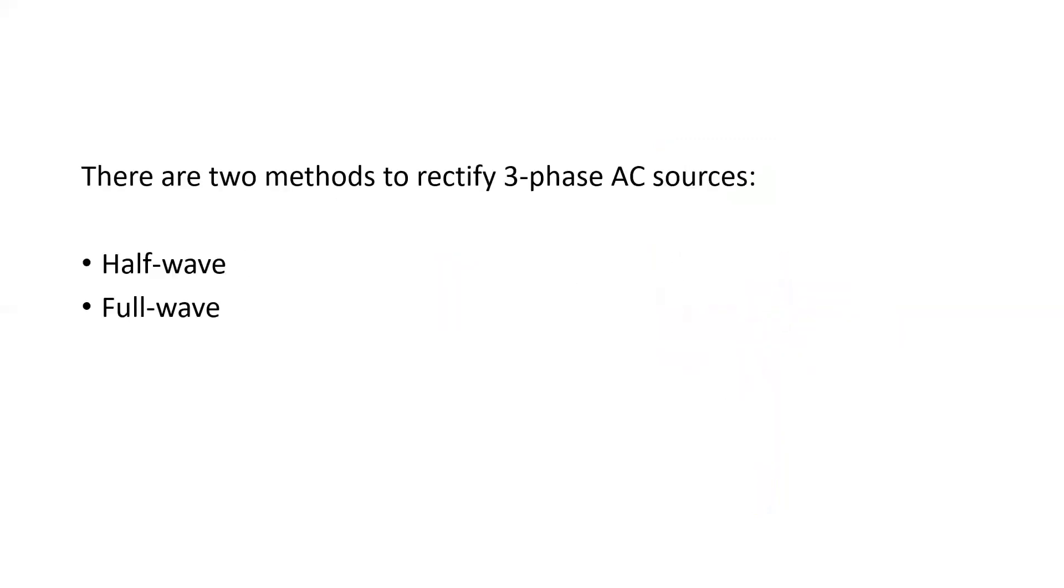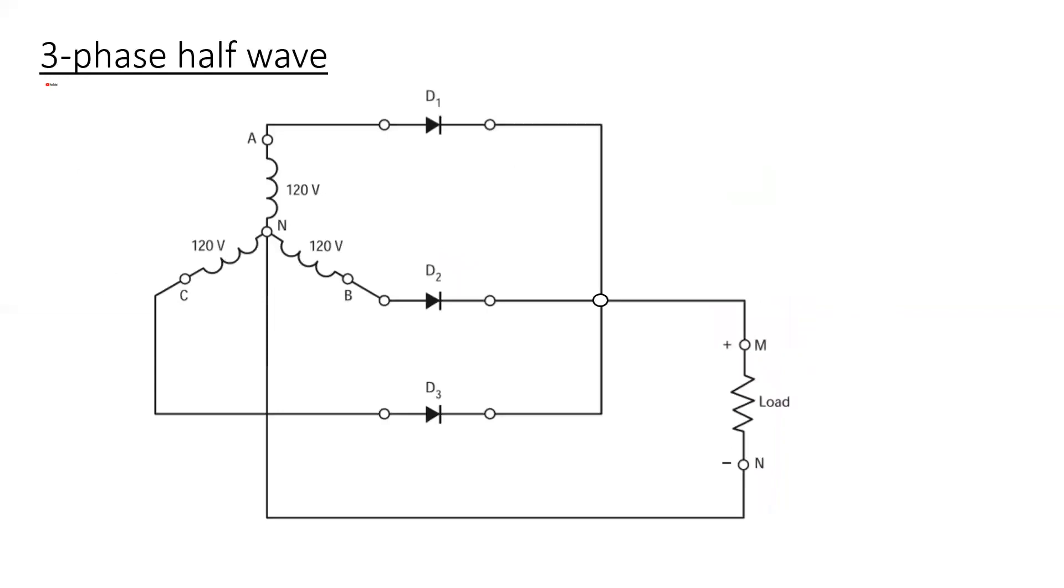There are two methods to rectify three-phase AC sources, half-wave and full-wave. In half-wave systems, we require three individual diodes with a common connection on the end of the pointing section. We also require a connection to the neutral of the source. This restricts three-phase half-wave rectifier systems typically to Y-connected three-phase sources. The voltage that we would expect across the DC load of this system would be equivalent to the E-phase value times 1.17, E-phase being the RMS voltage.